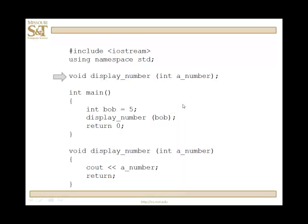The compiler hits return zero, goes down, and compiles the code for the function definition. It matches the function header with the prototype to make sure they're the same. It's an okay line of code, and a return — returning nothing to match that void. That's fine.